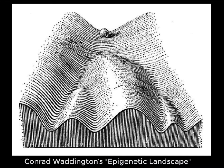Here we see Conrad Waddington's famous epigenetic landscape diagram, and this provides us with another way to visualize the ideas of attractors and basins of attraction. If the marble rolls down this landscape, it's going to end up in one of these four troughs — here, here, here, or here. These are each attractors. And the basins of attraction for each of these attractors would be the areas within the landscape that, given a certain speed, momentum, weight, etc. of the marble, would lead the marble to end in one of these attractors.